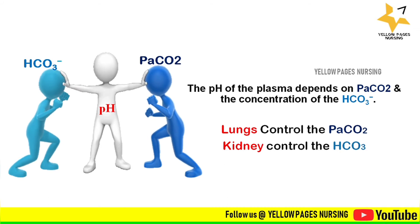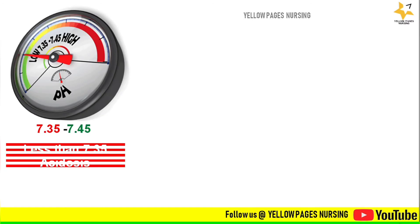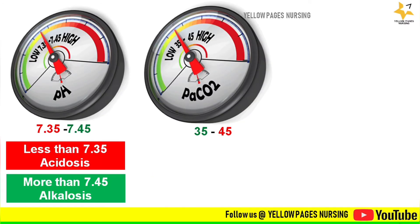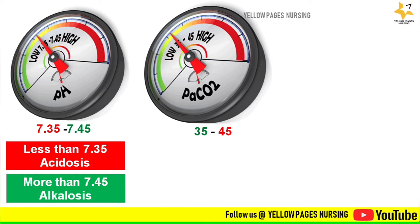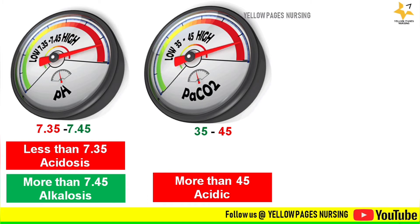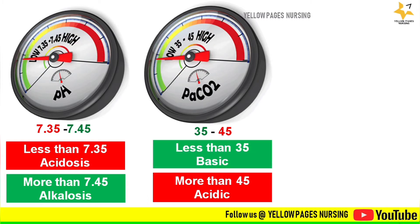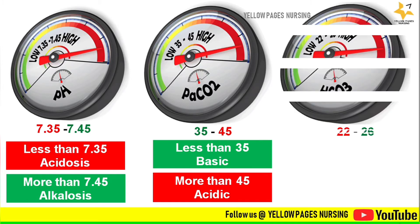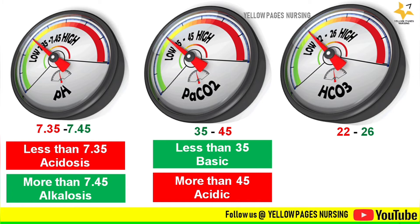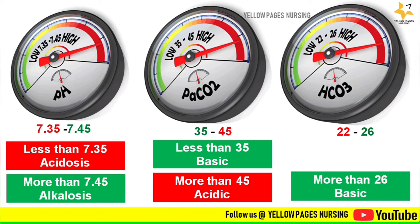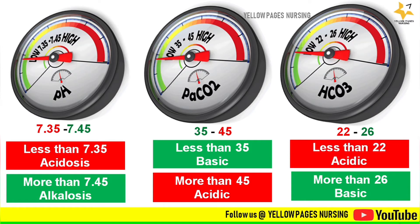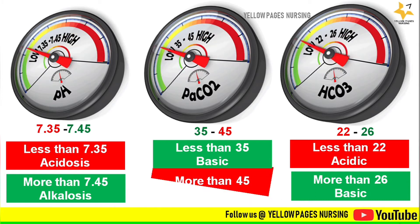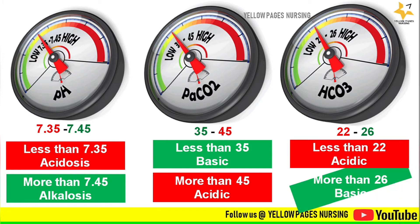Regarding PaCO2, the normal level ranges between 35 to 45 mmHg. When it goes beyond 45 mmHg it is acidic, and if it is less than 35 mmHg it is basic. Bicarbonate's normal level is between 22 to 26. If it goes beyond 26 it is basic, and if it falls below 22 it is acidic. So when PaCO2 goes beyond normal it is acidic, and when bicarbonate goes beyond normal it is basic.